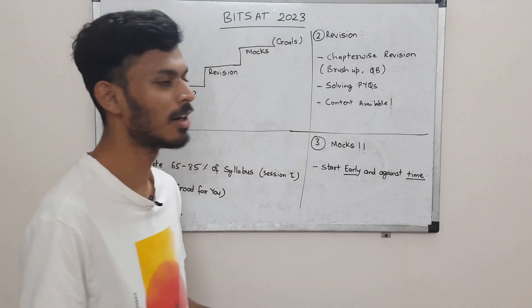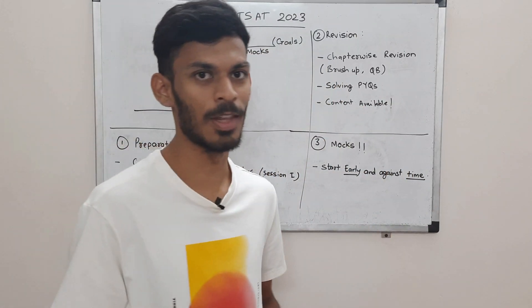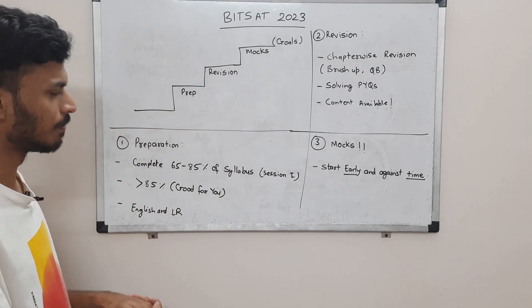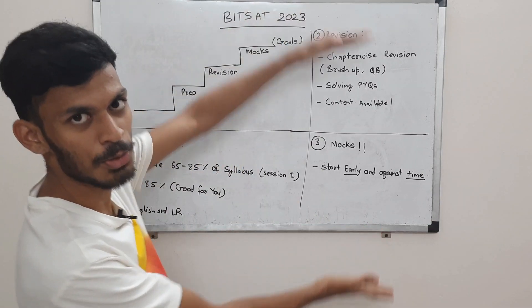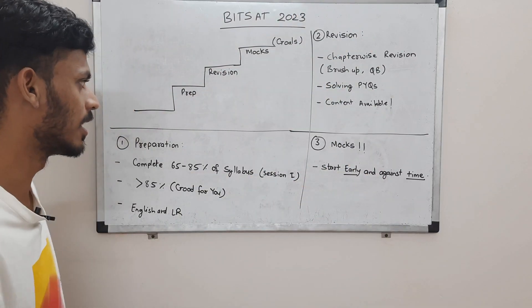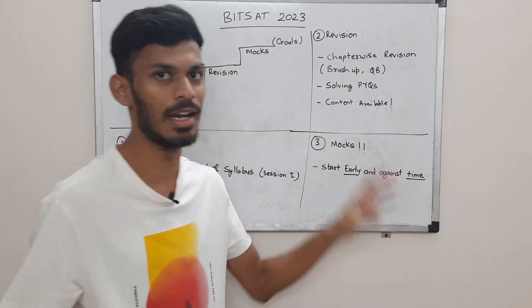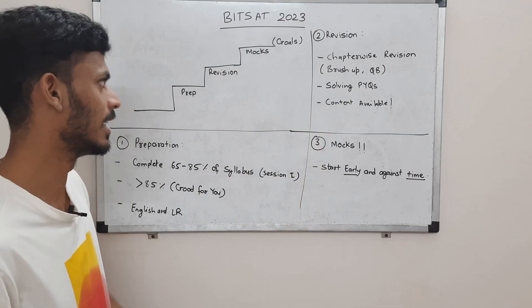Coming back to step two, you are supposed to do revision. Suppose you give about four months for preparation, then you have two months for these two things. And these two things you can do simultaneously. Every Sunday, you can give mocks and revise on the other days.